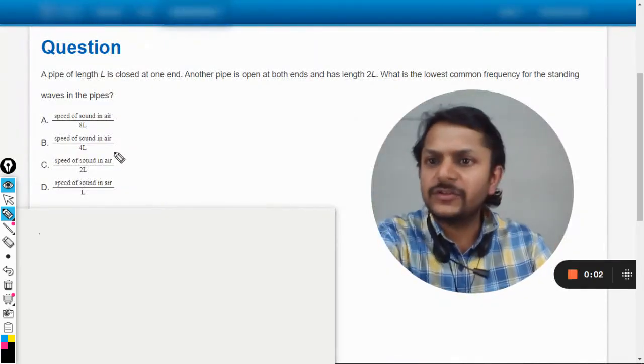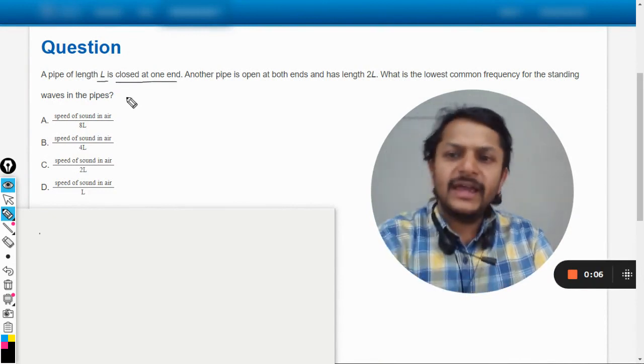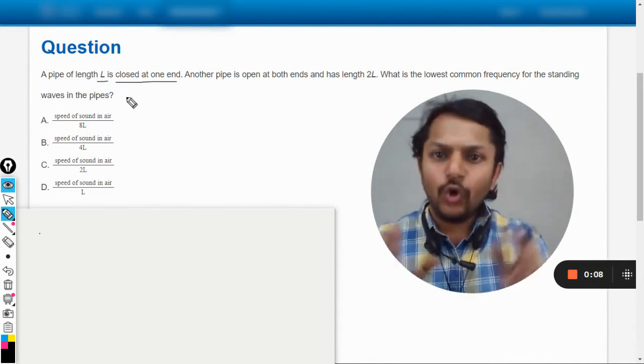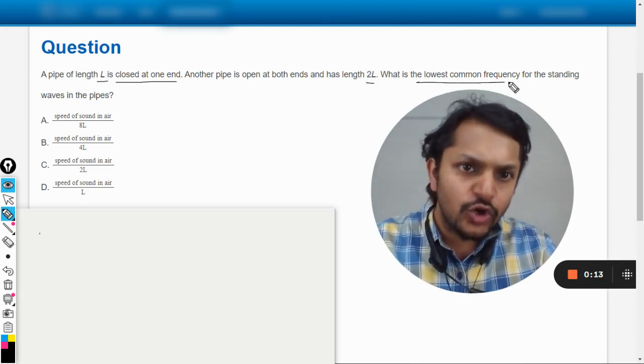Dear students, let's see what's in this question. A pipe of length L is closed at one end. Another pipe is open at both ends and has length 2L. What is the lowest common